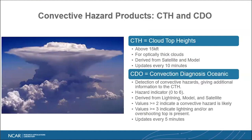The convective hazard products are CTH and CDO. CTH covers really high clouds — opaque clouds that can be registered with a satellite above 15,000 feet, as they are optically thick. It is derived from satellite views from the 11 micron channel as well as model data. Updates are every 10 minutes, which is really governed by the satellite systems themselves.